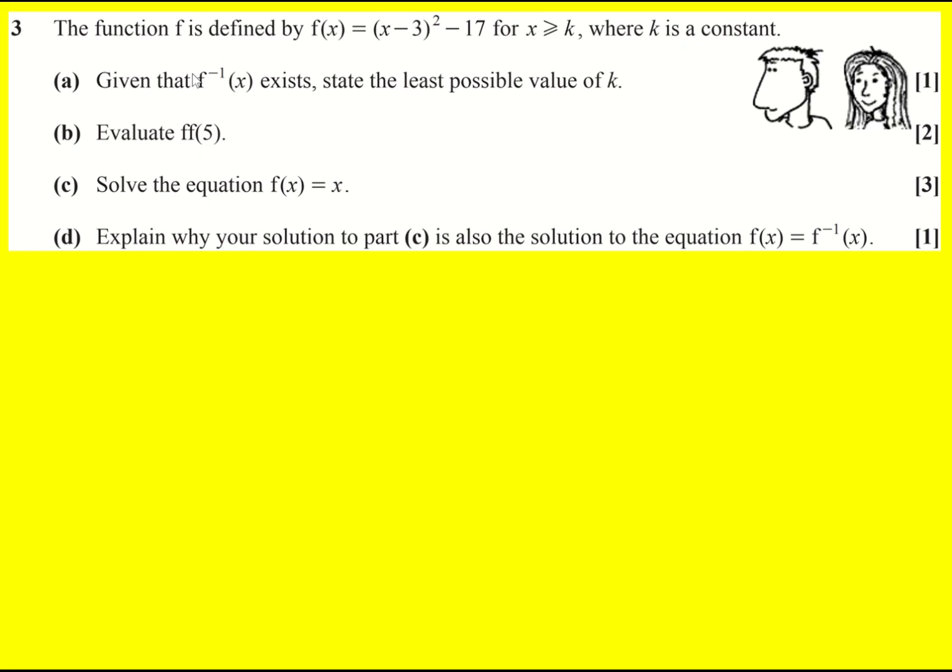Now we're told that given that the inverse exists, state the least possible value of k. So let's sketch if we were to allow all possible values of k, what would this function look like?